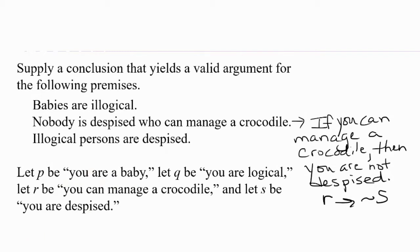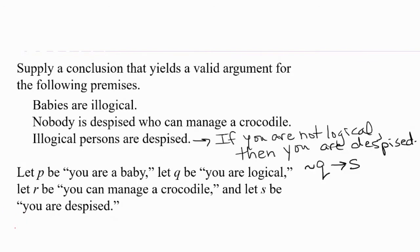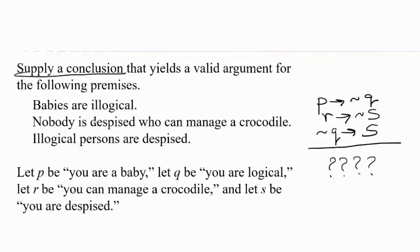Let's look at the third premise. Illogical persons are despised. What if-then statement is that one implying? Is it saying if you're not logical, then you're despised, or if you're despised, then you're not logical? If you're not logical then you're despised, which would be negation of Q, negation of logical, implies S, that you're despised. We now have the three statements in symbolic form. P implies not Q, R implies not S, not Q implies S.